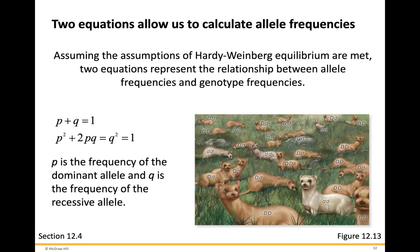Two equations allow us to calculate allele frequencies. The first is p + q = 1, where p is the frequency of the dominant allele and q is the frequency of the recessive allele — in this case, dominant being dark fur and recessive being light fur. The second equation is p² + 2pq + q² = 1. Note: there is a typo in the slides; the equal sign between 2pq and q² should be a plus sign. Please correct this.